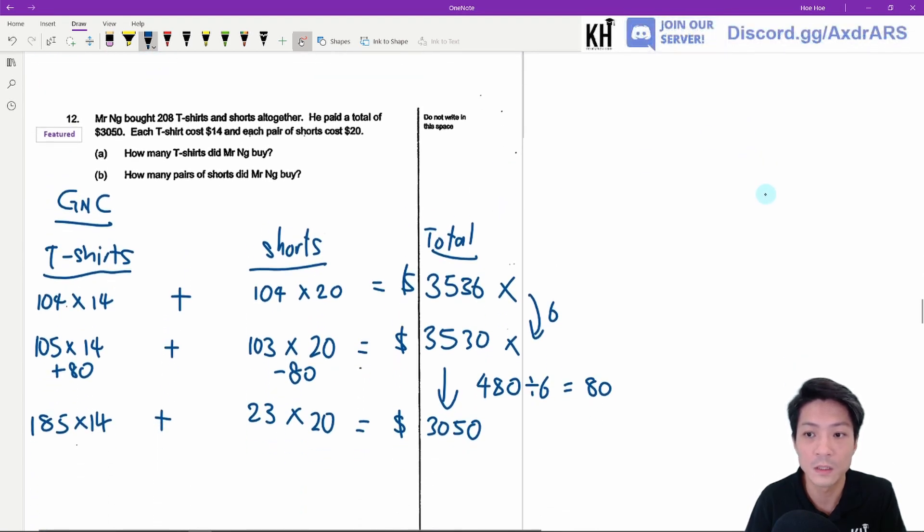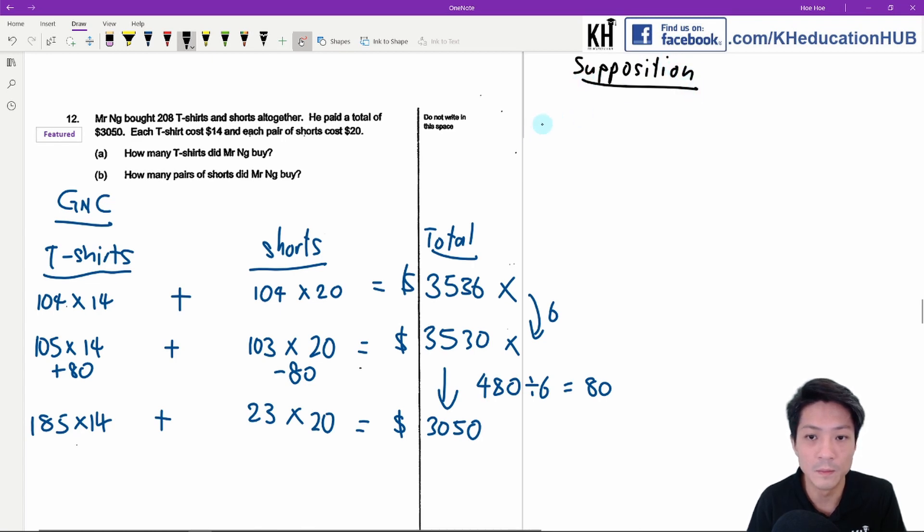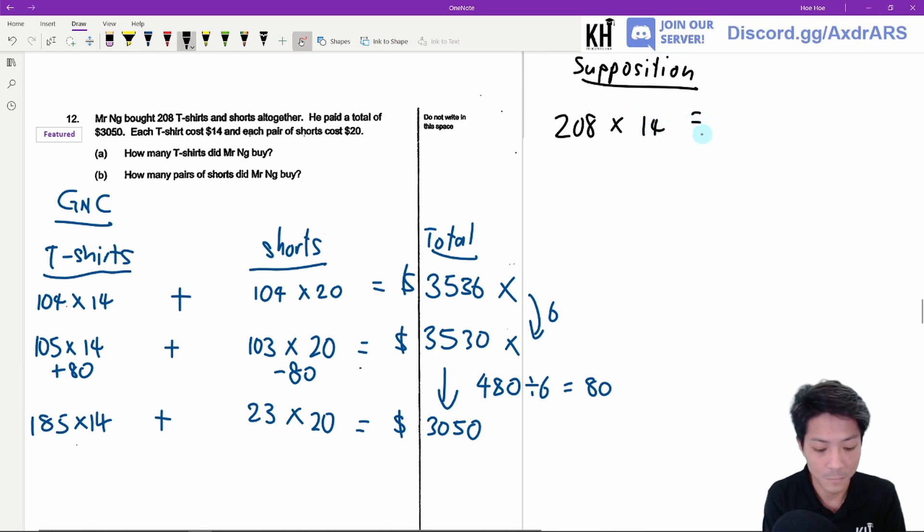I'm going to use the supposition method to also do the question. So we're going to assume that all the 208 items are going to be t-shirts.